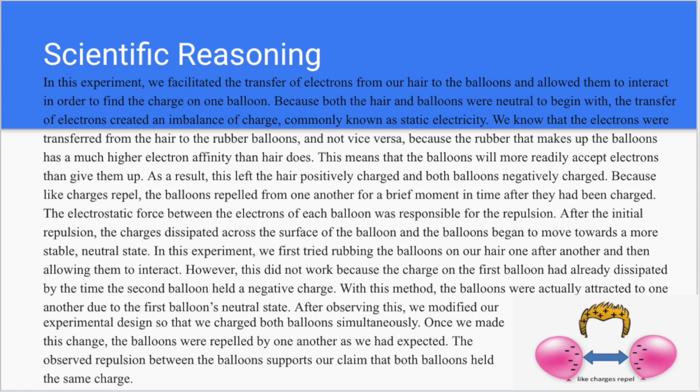After the initial repulsion, the charges dissipated across the surface of the balloon, and the balloons began to move towards a more stable, neutral state. In this experiment, we first tried rubbing the balloons on our hair one after another and then allowing them to interact. However, this did not work because the charge on the first balloon had already dissipated by the time the second balloon held the negative charge. With this method, the balloons were actually attracted to one another due to the first balloon's neutral state. After observing this, we modified our design so that we charged both balloons simultaneously.